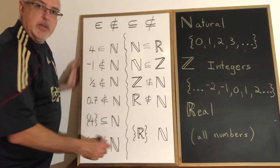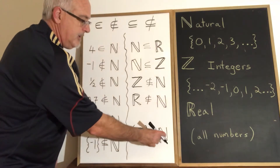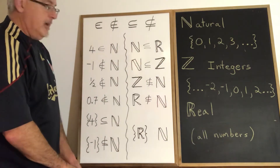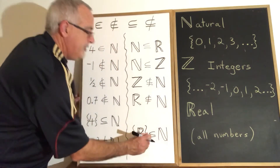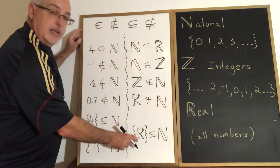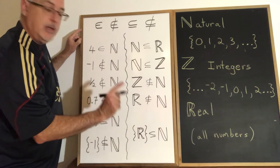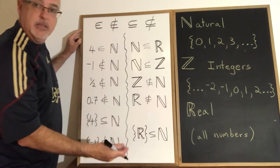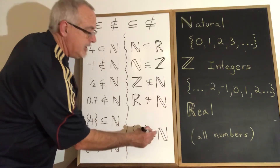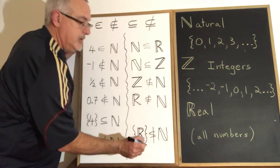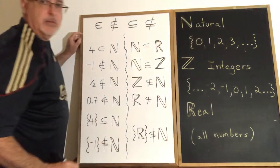Then we get to this last one, which is a bit of a trick question. Is this a subset of natural numbers? The answer is no. This is a set — the set that has only one element, and that element is the special R symbol. The set containing the R symbol is not a subset of natural numbers because the R symbol is not a natural number.